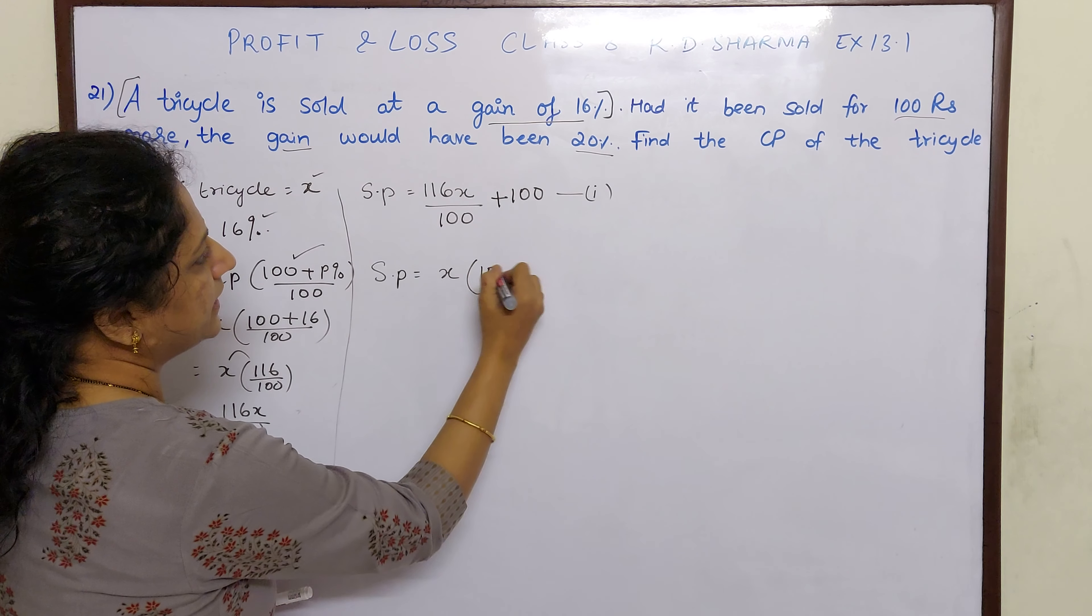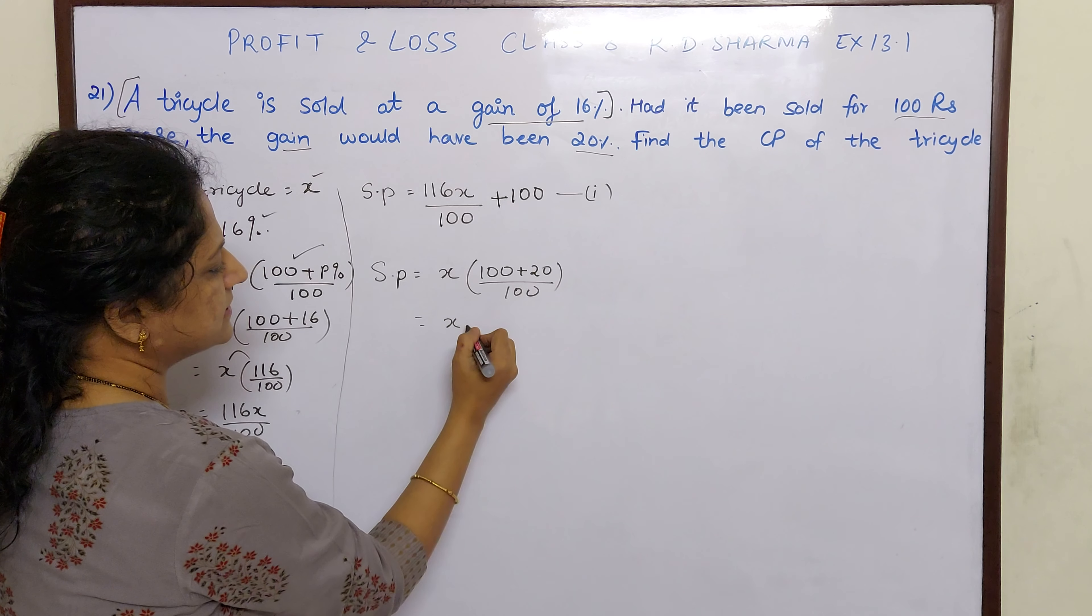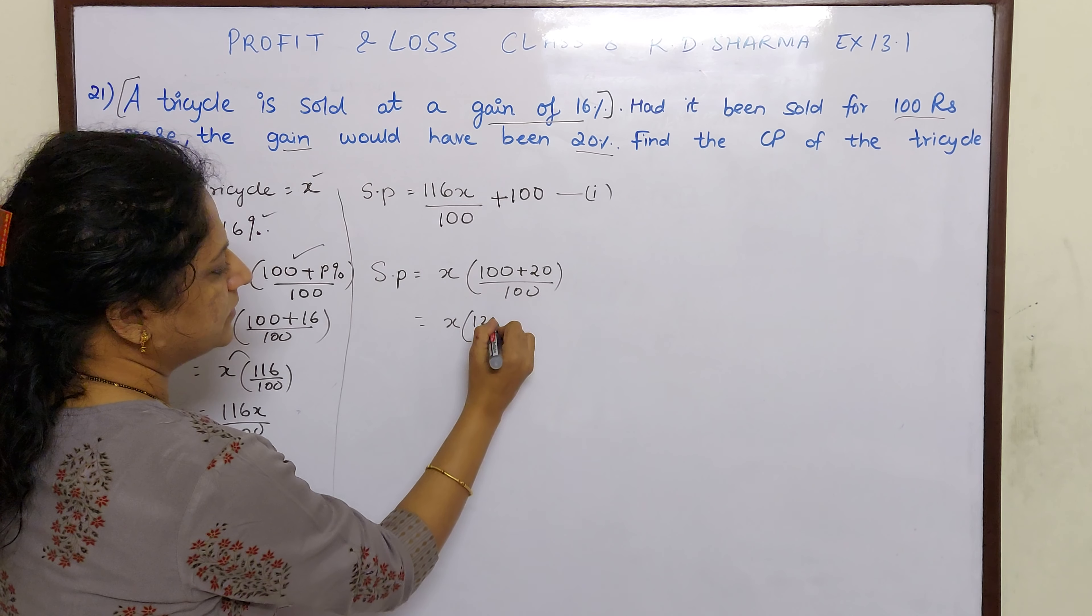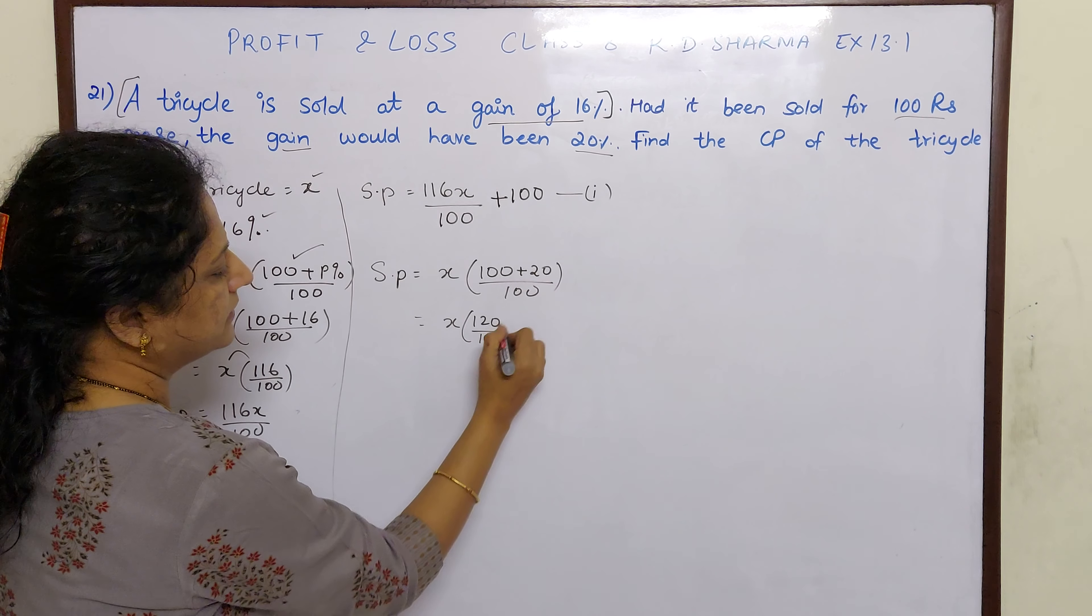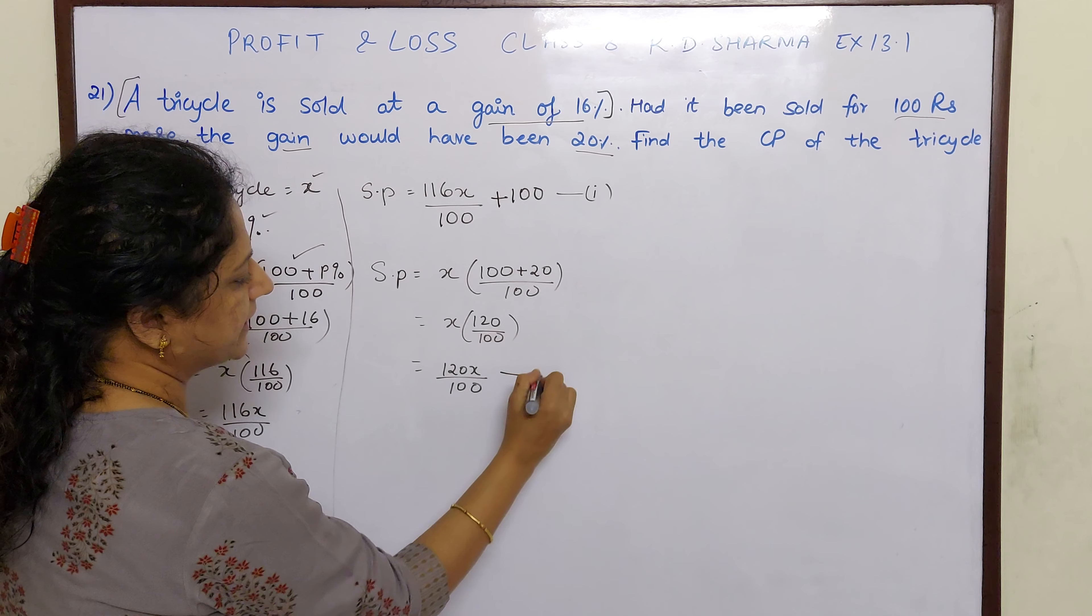So CP is X, 100 plus 20 by 100, which is nothing but X into 120 by 100, which is 120X by 100.